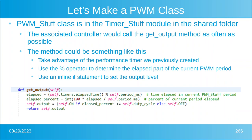The PWM class is in the shared folder. The associated PID controller would simply call the get_output method as often as necessary. The method takes advantage of the performance timer we created earlier, uses the percent operator to get the remainder of division, and uses an inline if statement to set the output level. On screen you can see a perfectly useful get_output method that encompasses all of these things — it's only a few lines in Python, which is another reason we like Python so much. It's easy to read, easy to write, and a method is often just a few lines.